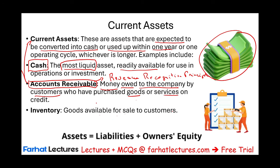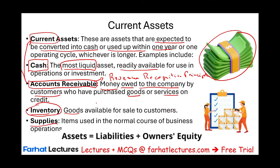Inventory is goods available for sale to customers. Retailers like Walmart buy goods first — when they buy it, it's inventory, then they resell it. Other assets include supplies — items like pens, pencils, and paper used in the normal course of business operations. Those are also current assets because you expect to use them shortly. So we have a diverse type of assets; some are current, and we also have non-current assets.